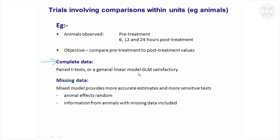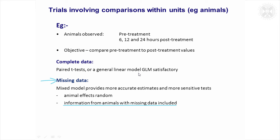If you've got complete data then paired t-tests or a general linear model would be satisfactory, but if you've got missing data it would lead to some improvement to use a mixed model. You would get more accurate estimates and more sensitive tests if you fitted animal effects as random, because it would include information from animals with missing data. I haven't got an example readily to hand to show that, but I've got an example which was taken from a clinical study.